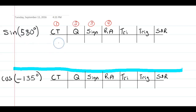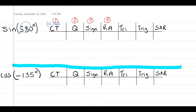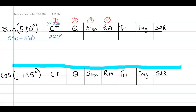Starting with sine of 580°, we need to find the coterminal angle. The coterminal angle is always an angle between 0 and 360 degrees that terminates at the same point as our original angle. In radians, this would be between 0 and 2π. With degrees, we add or subtract 360°. Here, 580 minus 360 gives us 220°, which is less than 360, so our coterminal angle is 220°.